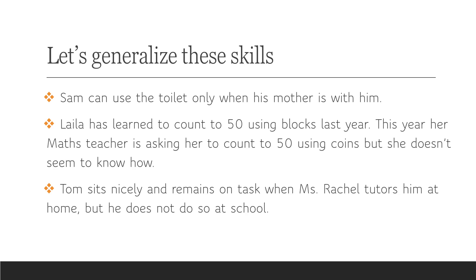The second example: Leila has learned to count to 50 using blocks last year, but this year she is unable to count using coins. Leila needs to generalize the skill of counting to 50 across different stimuli. She also needs to generalize it across different people — she should not only be able to count when her math teacher asks her to, but also when her mother asks her to, when her friends ask, and so on. She needs to do it across different settings: at home, at the playground when she plays, or at the supermarket. Her skill also needs to be maintained over time.